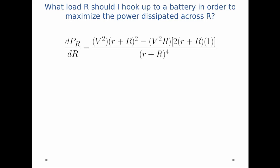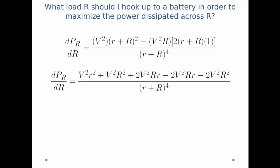And now let's just do some simplification. So I expand out all of the terms in parentheses. I notice that a couple of these terms cancel. So I get the derivative equal to V squared little r squared minus V squared big R squared divided by quantity r plus R to the fourth.